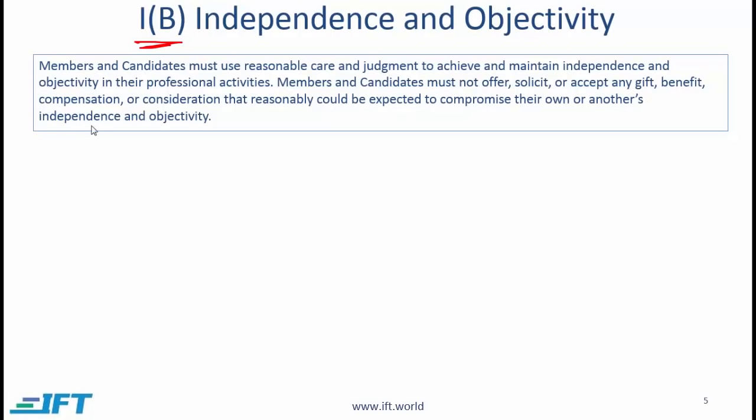This is extremely important and the concept of independence and objectivity keeps showing up in other standards also. There is really one core point being made in this standard: we as investment advisors need to be independent and objective, and the second sentence is saying that anything such as a gift, benefit, or additional compensation that compromises independence and objectivity should basically not be allowed or should be discouraged.